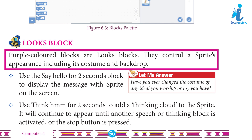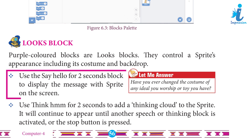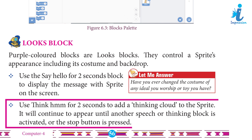Looks blocks are purple-colored blocks. They control a sprite's appearance, including its costume and backdrop. Use the 'Say Hello for 2 Seconds' block to display a message with the sprite on the screen. Use 'Think Hmm for 2 Seconds' to add a thinking cloud to the sprite — it will continue to appear until another speech or thinking block is activated or the stop button is pressed.